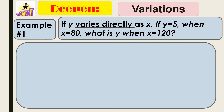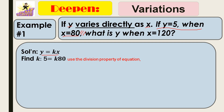For example, if y varies directly as x, and y equals 5 when x equals 80, what is y when x equals 120? First, you write the equation or the variation: y equals kx because y varies as x. It says that y equals 5 when x equals 80. In this scenario, you need to get the k first. Use the division property — substitute y by 5 and x by 80.